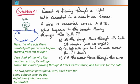The two parallel paths, the bulb and the wire, each have the same voltage drop, by the definition of what we mean by in parallel. As a result, the voltage drop for the light bulb has to equal the voltage drop for the wire, or I_wire times the resistance of the wire has to equal I_bulb times the resistance of the bulb.